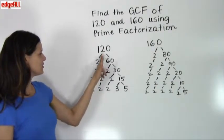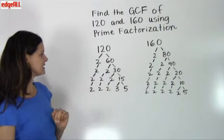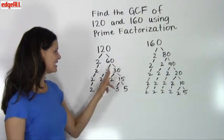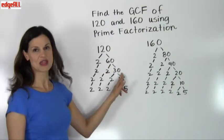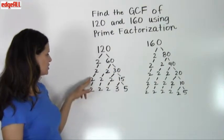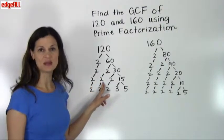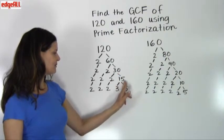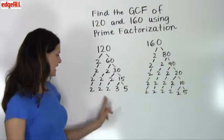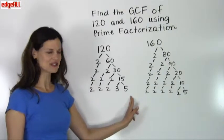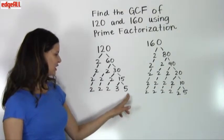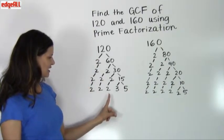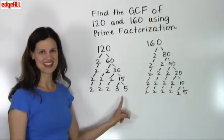For 120, I've broken it down by dividing out a 2 to get 2 times 60. Then 60 divides to 2 times 30, and 30 divides by 2 to give 2 times 15. The 2's all remain as they are because they are prime numbers. The final level of this pyramid gives us the prime factorization of 120, which is 2 times 2 times 2 times 3 times 5.